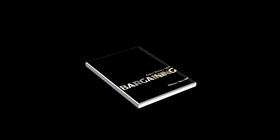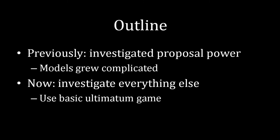This lecture actually represents a break in the course. Previously, we've been focusing on proposal power. We started off with an ultimatum game, then we had a single counteroffer, then multiple counteroffers, and then we finally built up to the Rubinstein game where there's an infinite horizon and infinitely many potential counteroffers. These models were great because they allowed us to analyze how proposal power matters, but it came at a significant downside — those models grew very complicated very quickly.